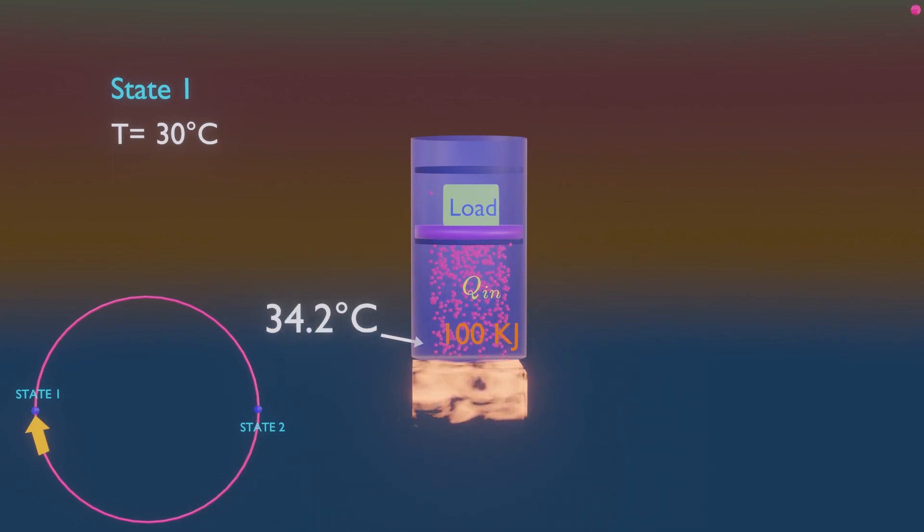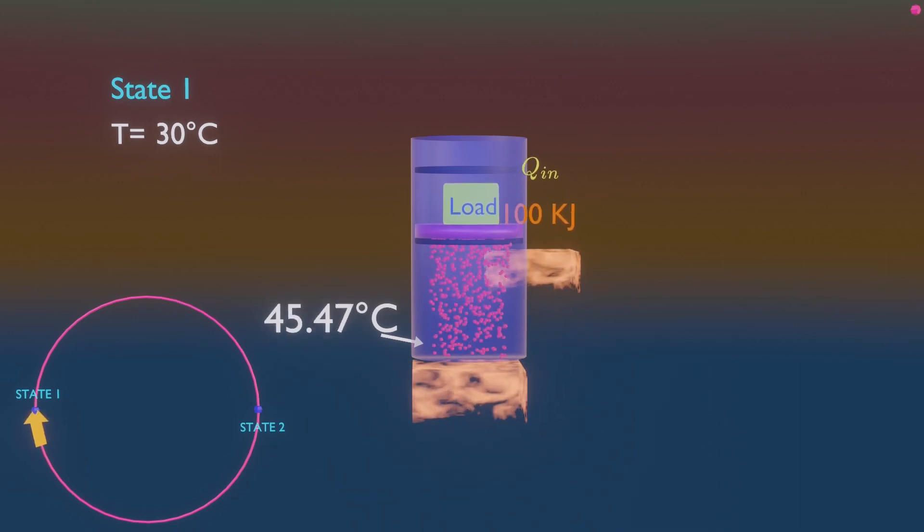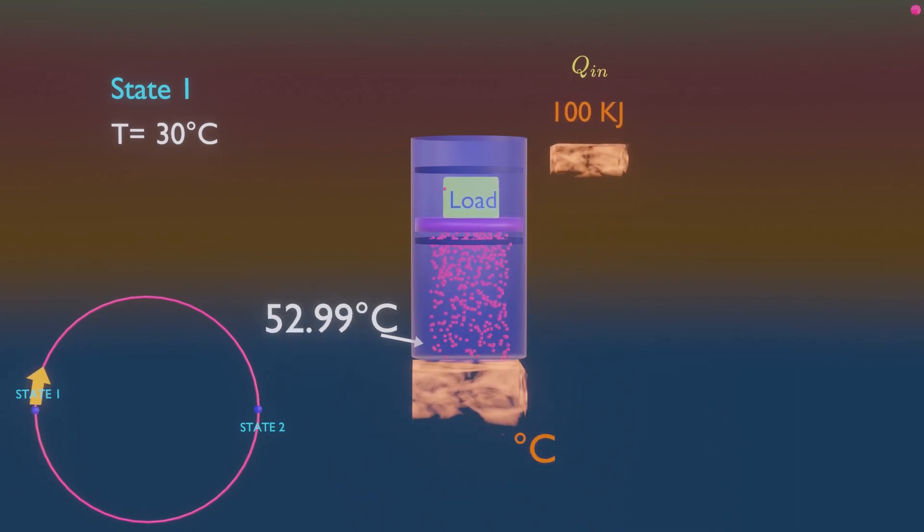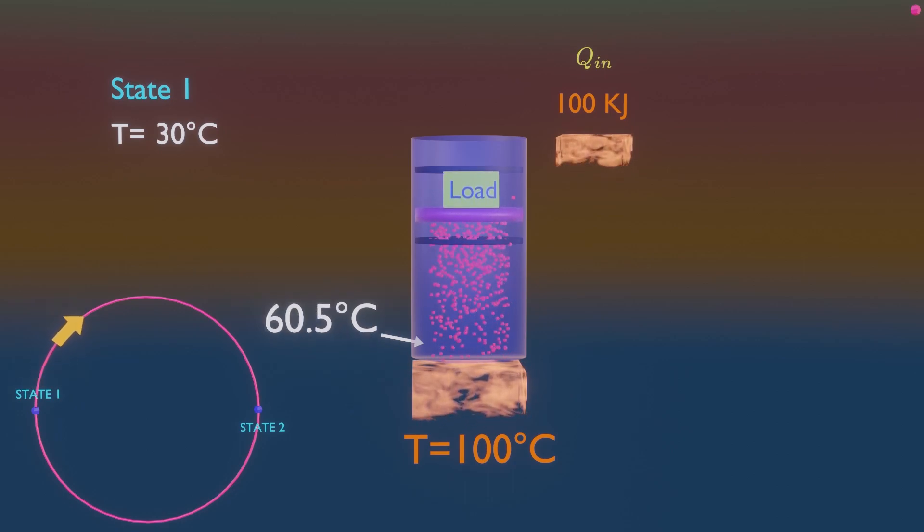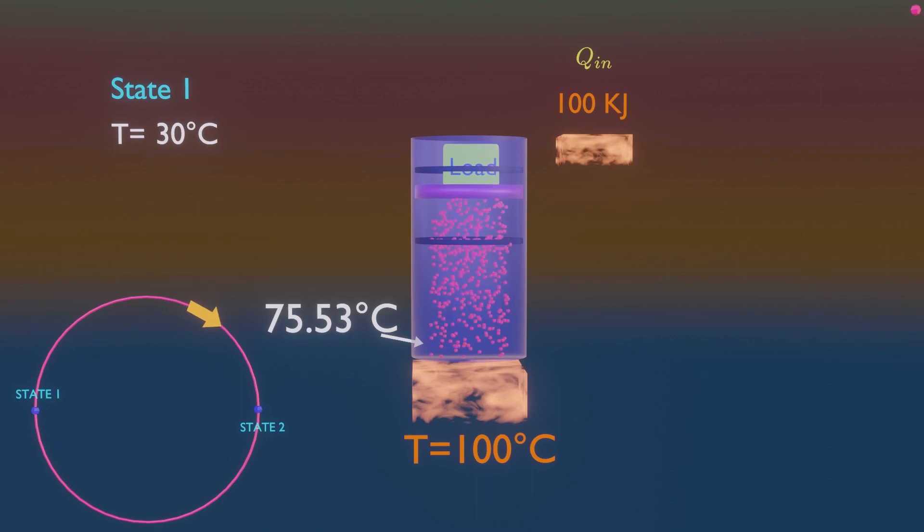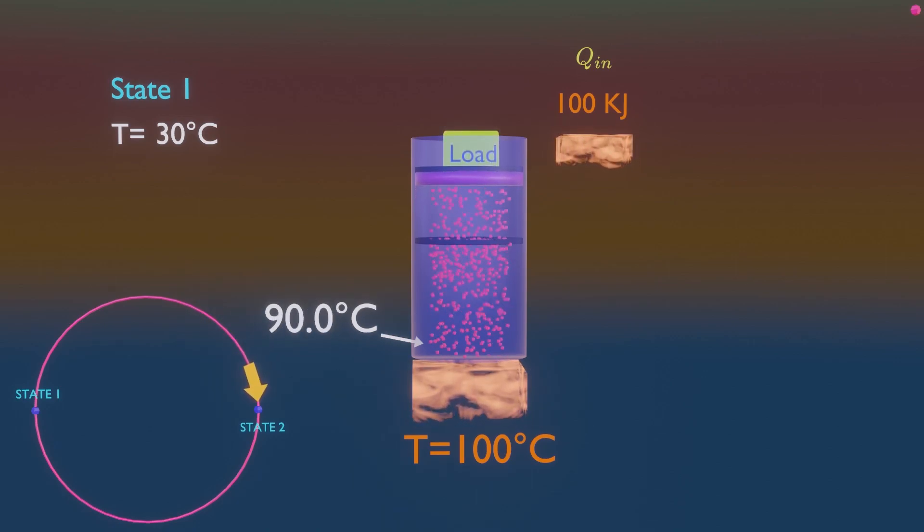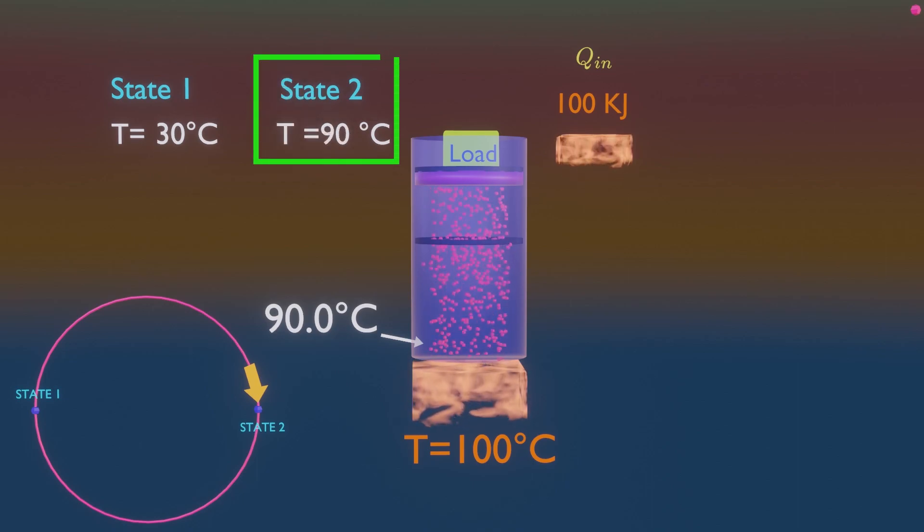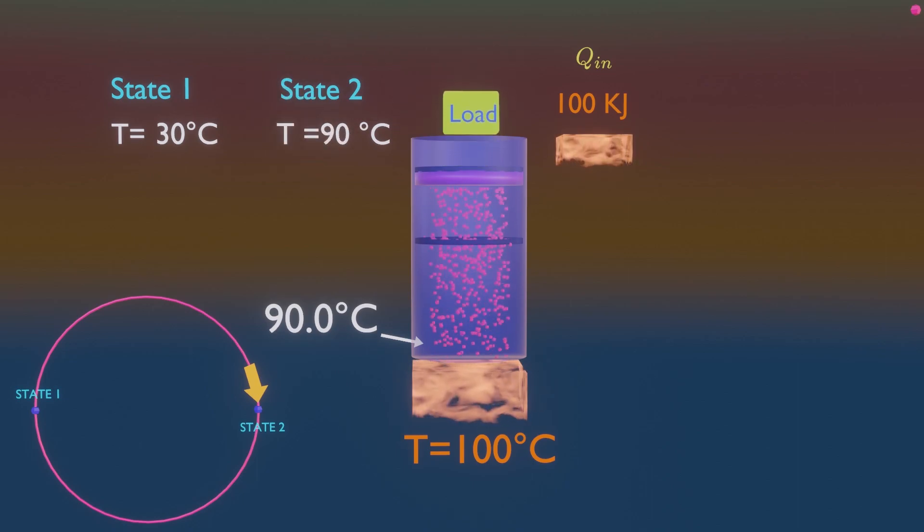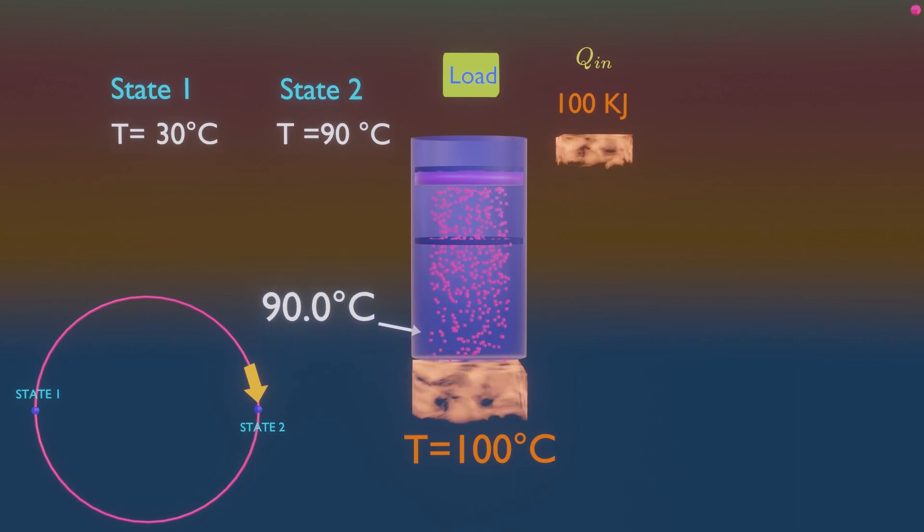Now 100 kilojoules of heat is given to this gas from the source at 100 degrees Celsius, causing it to expand and to raise the loaded piston until the piston reaches the upper stops. At this point, our heat engine is in state 2. Here the load is removed and the gas temperature is observed to be 90 degrees Celsius.